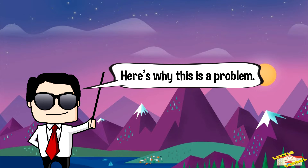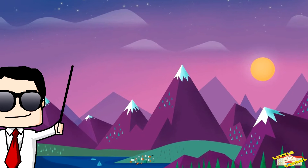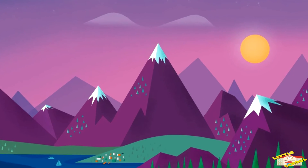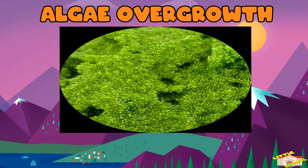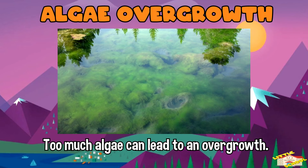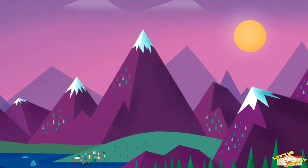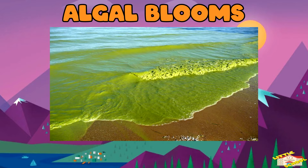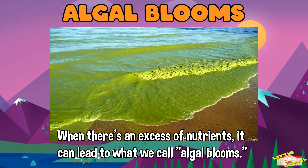Here's why this is a problem. Algae overgrowth: nutrient-rich water can cause rapid growth of tiny plants called algae. While some algae are normal and important for the ecosystem, too much of it can lead to an overgrowth. When there's an excess of nutrients, it can lead to what we call algal blooms.